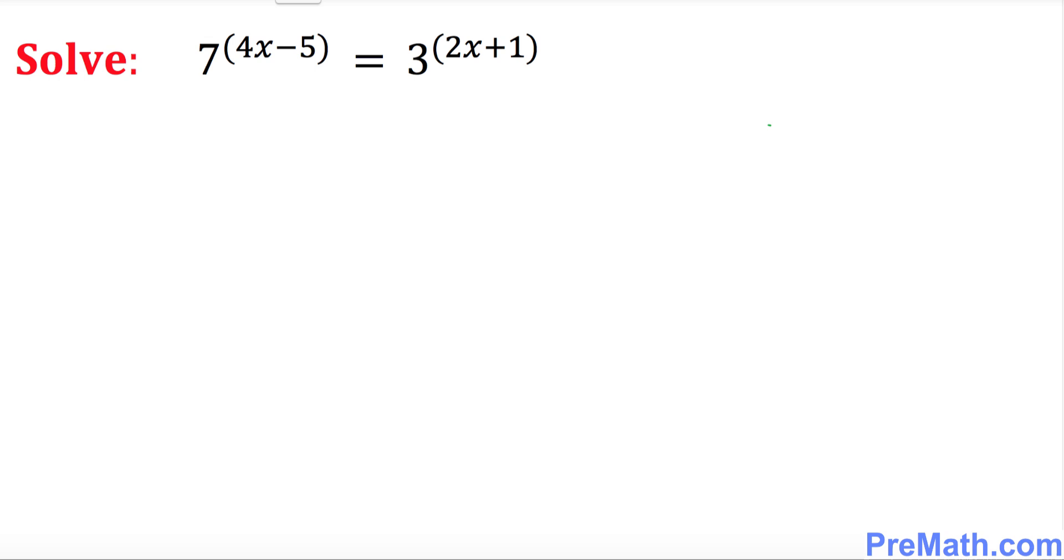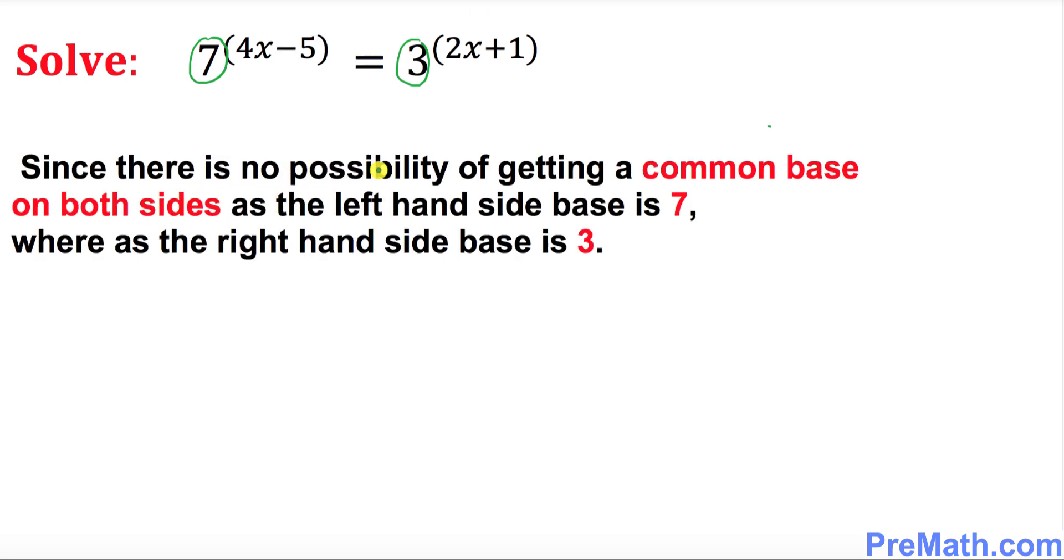One thing to keep in mind: the base on the left hand side is 7 and the base on the right hand side is 3. Since there is no possibility of getting a common base on both sides, as the left hand side base is 7 and the right hand side base is 3.